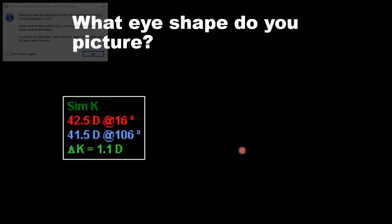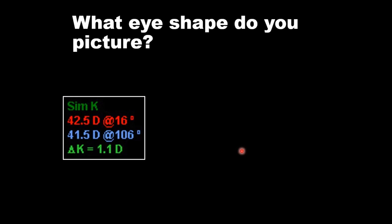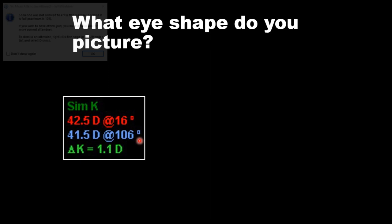Let's take another patient with very similar K readings: 41.5 by 42.5, or 1.1 diopters of corneal astigmatism. The only difference is this eye is against-the-rule. Picture in your mind what this cornea looks like if we were to take the topography.